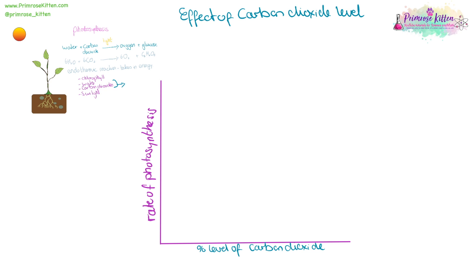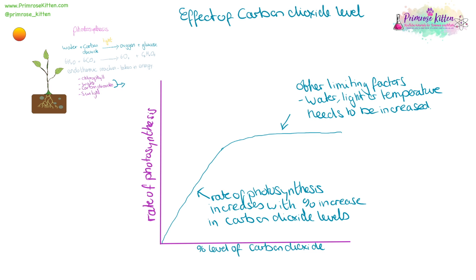The rate of photosynthesis is going to depend on the percentage level of carbon dioxide. As the percentage level of carbon dioxide increases, the rate of photosynthesis is going to increase, but only up to a point. After this point, there are going to be other limiting factors — we need to increase something like the water, light, or temperature if we want more photosynthesis to take place. We could easily switch this out to be percentage level of water and the graph would look the same.